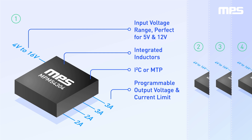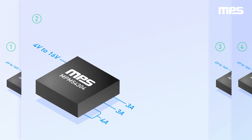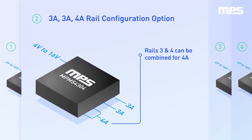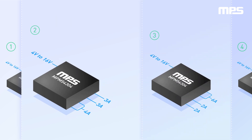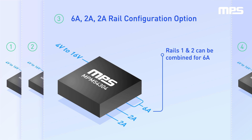Channels 3 and 4 support up to 2 amps per output. The MPM54304 supports non-volatile memory and an I2C interface with configurable output voltage and current limit. It also features paralleled connection for channels 3 and 4 to provide up to 4 amps of output current.